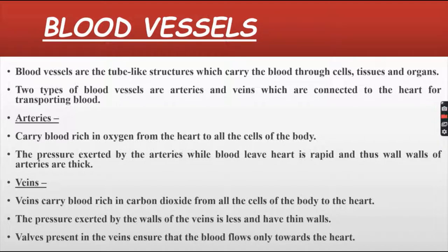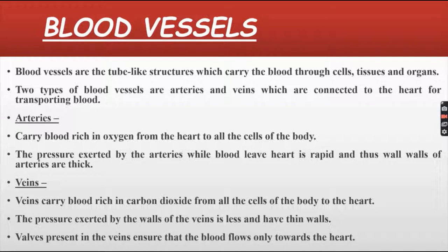Arteries carry blood rich in oxygen from the heart to all the cells of the body. The pressure exerted by the arteries while blood leaves the heart is rapid, and thus the walls of arteries are thick. Veins carry blood rich in carbon dioxide from all the cells of the body to the heart. The pressure exerted by the walls of veins is less, and they have thin walls. Valves present in the veins ensure that the blood flows only towards the heart.